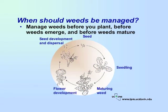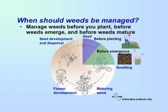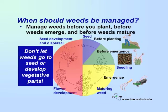Manage weeds before you plant, before the weeds emerge, and before weeds mature. Plan and design your landscape and properly prepare your site to prevent weed problems before you plant. Plant competitive species, develop dense plantings, and apply mulches to discourage weeds from emerging. Once weeds have emerged, regular cultivation and mowing are your key tools. The smaller the weed, the easier it is to control it. Do not let weeds go to seed or develop tubers or other vegetative or reproductive parts, because your management problems will be multiplied many times over.